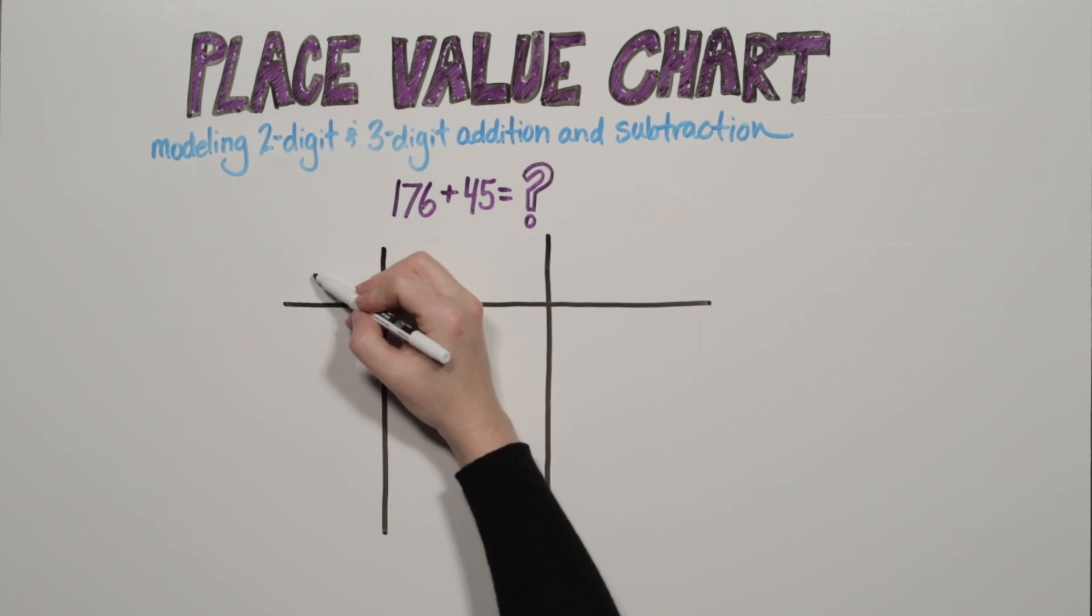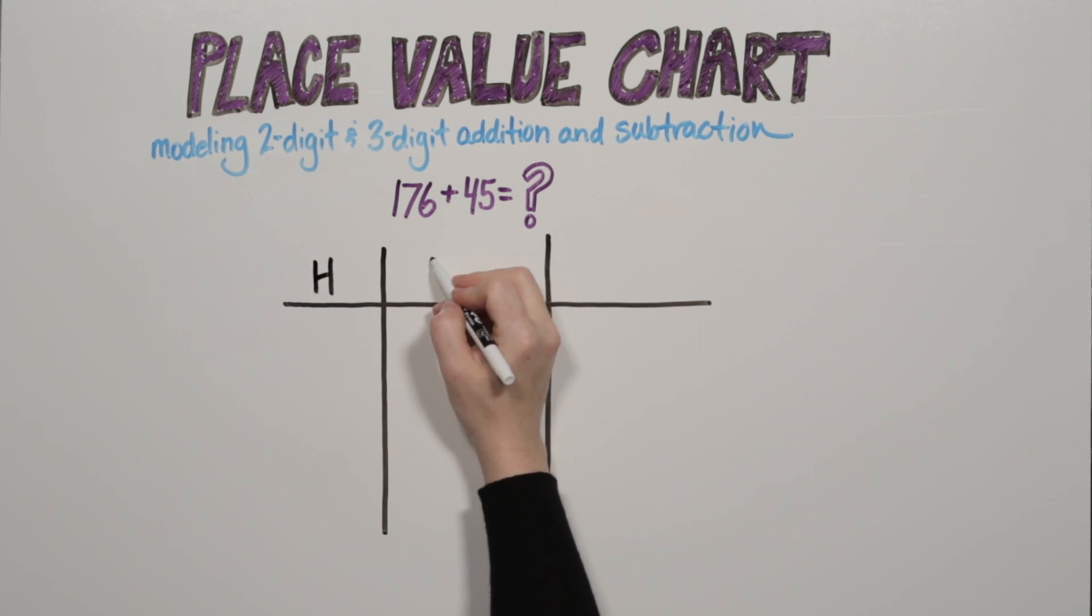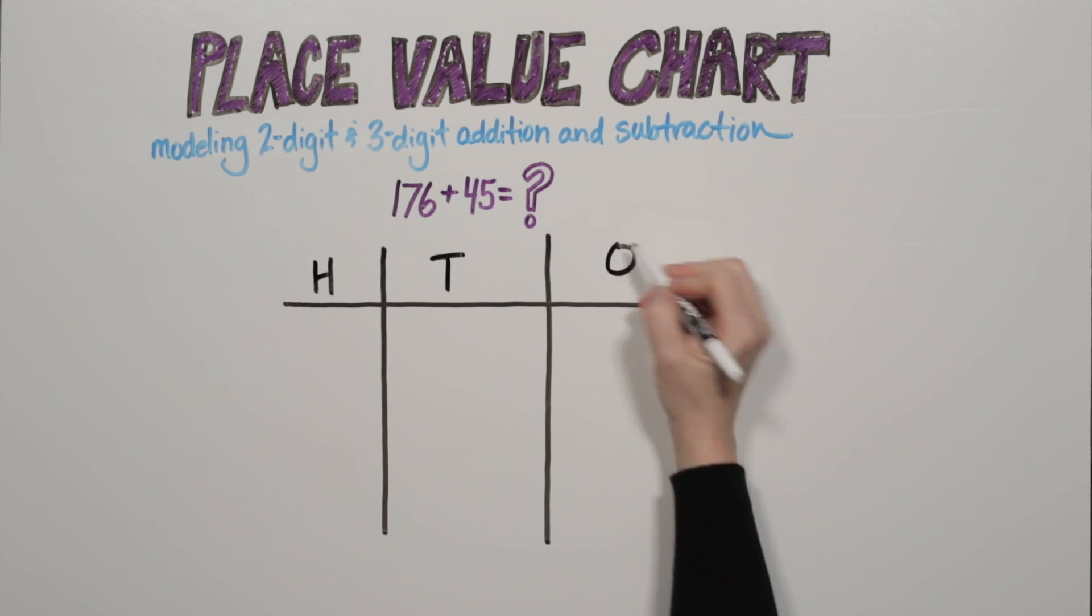We will break each number into hundreds, tens, and ones and represent them in each column.